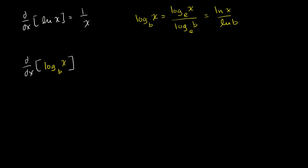So all we have to do is rewrite this thing. This is equal to the derivative with respect to x of the natural log of x over the natural log of b. Or we could even write it as 1 over the natural log of b times the natural log of x.